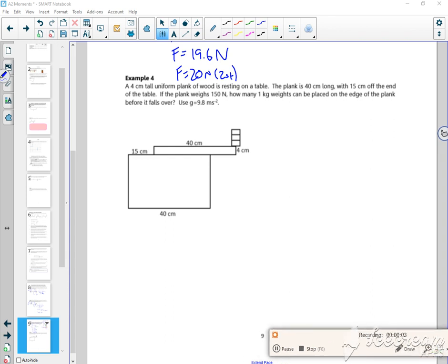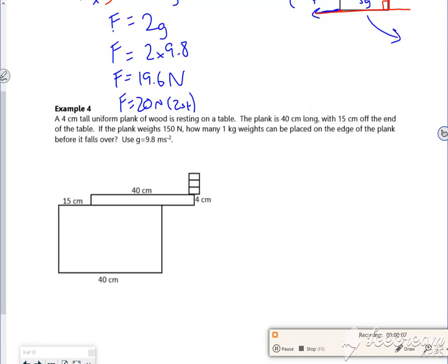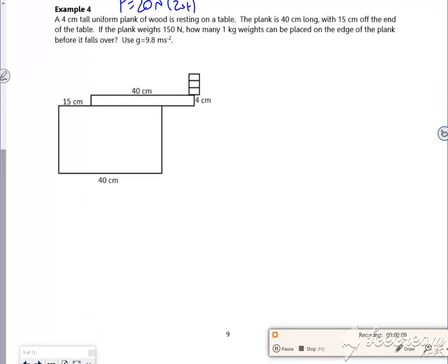Hi everyone, so this example is based on an exam question that came up in the 2018 paper and it confused a lot of people because they've not seen it. You've just got to think where's the pivot, and it's this idea that it's just about to lift.